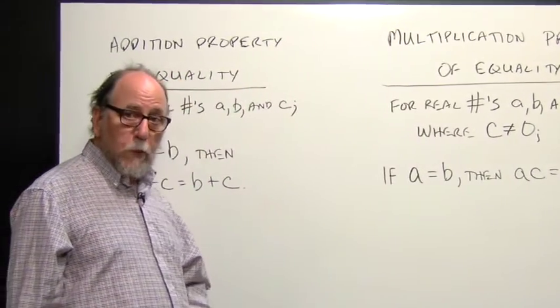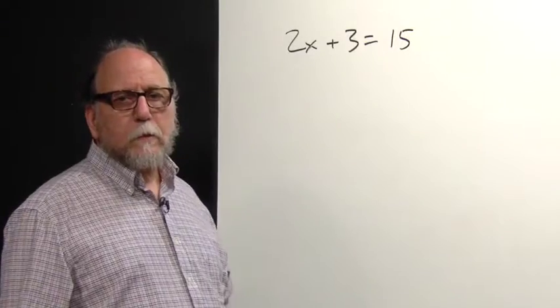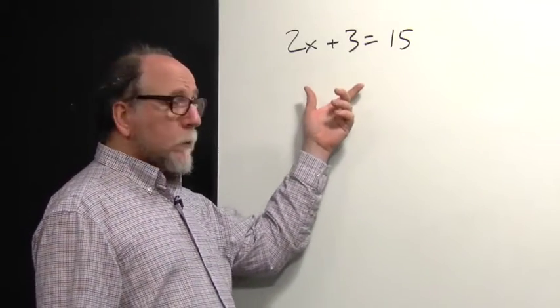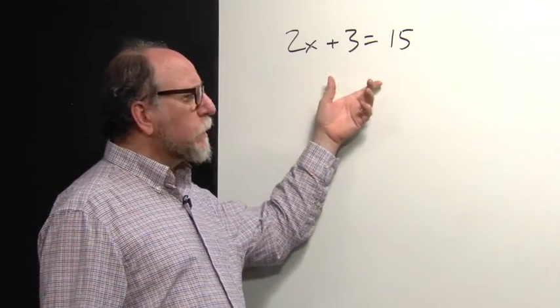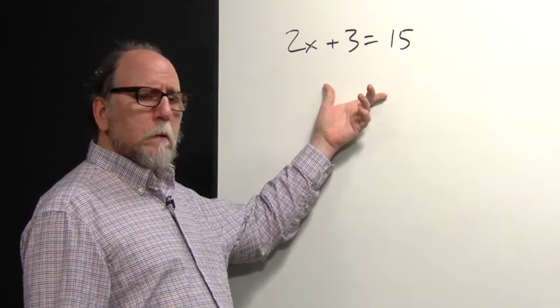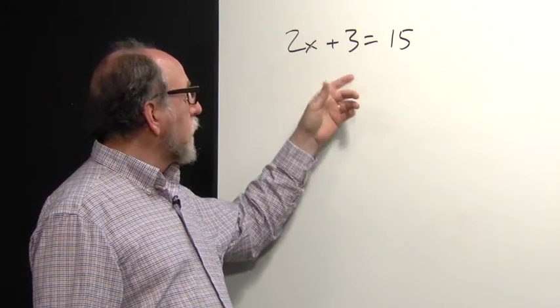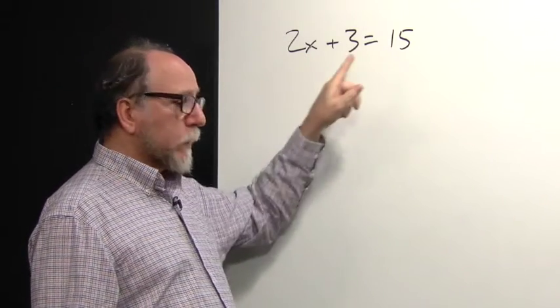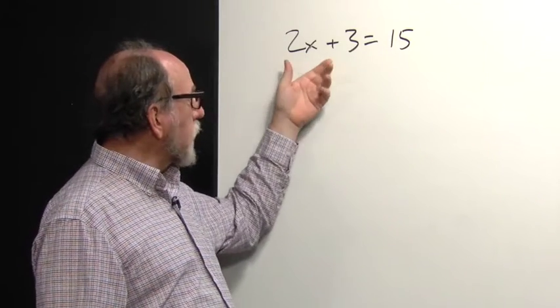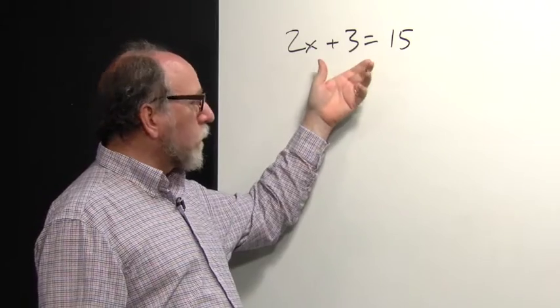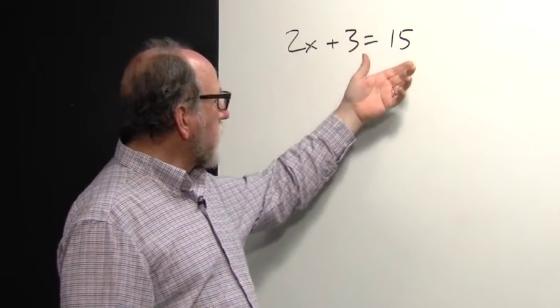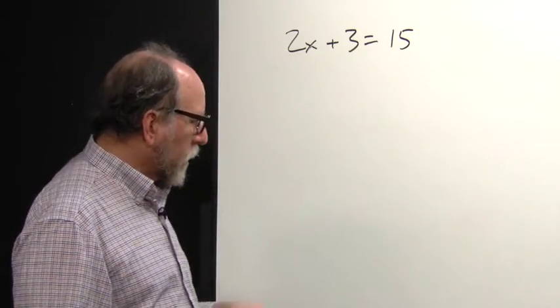I'll show you a couple of examples now. So here's the first example: 2x plus 3 equals 15. This is the general form that a linear equation in one variable would have. Ax plus b equals c. Some number times x plus some other number or minus some other number is equal to a different number.